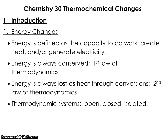An open system is when you have an exchange of matter and energy, like a cup of water — matter can evaporate out, the water can evaporate, and energy can be transferred. A closed system is when only energy can be transferred, so if I put a lid on a cup, that's a closed system.